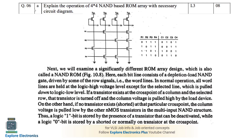The next choice question in Module 3 asks to explain the operation of a 4×4 NAND-based ROM array with a necessary circuit diagram. Since it is 4×4, we need 4 rows — R1, R2, R3, R4 — and 4 columns — C1, C2, C3, C4. The pull-up transistors are nMOS depletion-type transistors, meaning if the pull-down transistor is off, the output is set to 1. If the pull-down transistor's gate input is 1, the output can go low.